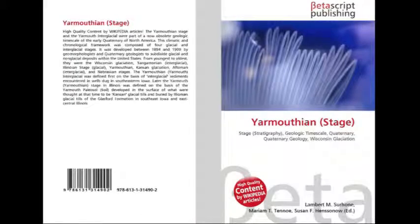The Yarmouthian Stage and the Yarmouth Interglacial were part of a now obsolete geologic timescale of the early Quaternary of North America. This climatic and chronological framework was composed of four glacial and interglacial stages. It was developed between 1894 and 1909 by geomorphologists and quaternary geologists to subdivide glacial and non-glacial deposits within the United States of America.